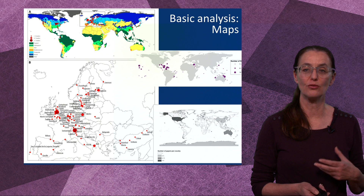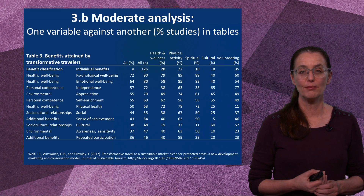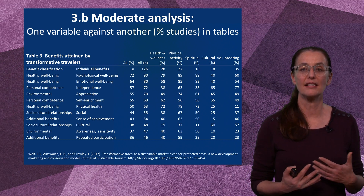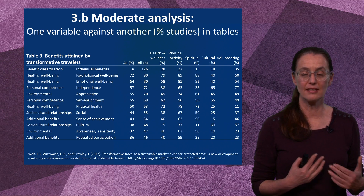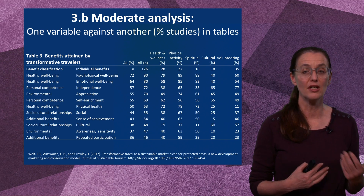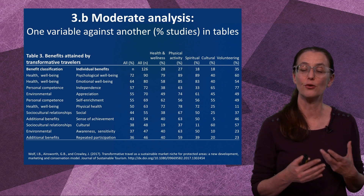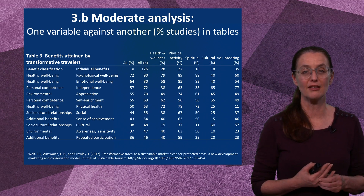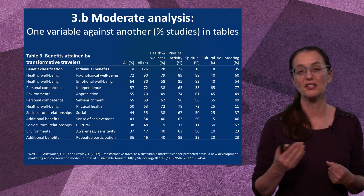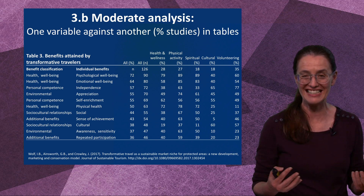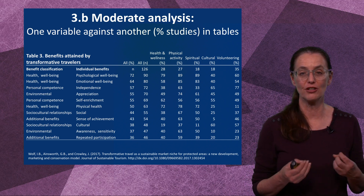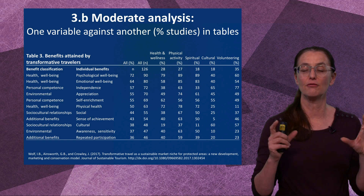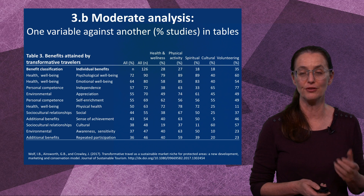All of those are basically still just one variable. Moderate analysis is one variable against another — where you do the numbers or percentage of studies in tables. Sometimes when you start the review you already think you want to compare one thing to another, but often when you get the data you start to get a feel for where the studies are, what factors are important, and you get emergent results. This example looks at benefits obtained by transformative travellers versus the type of travel they did, and by coding across variables as separate columns they can easily generate this sort of table using pivot tables in Excel.